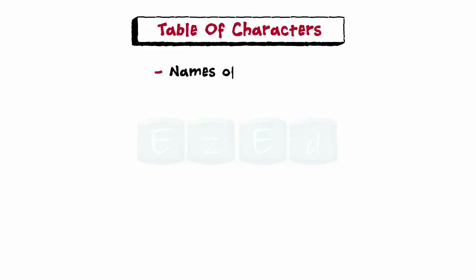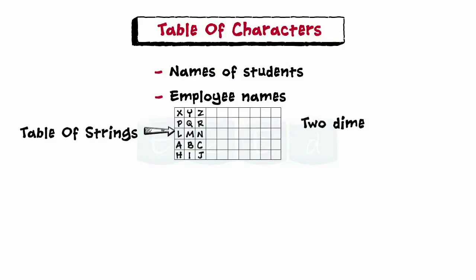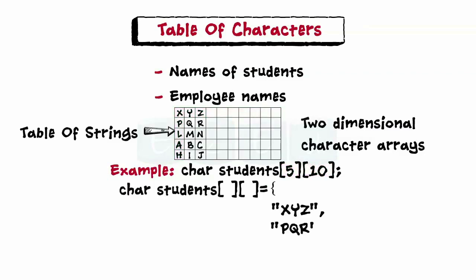Lastly, let's learn about the table of characters. We are often needed to list character strings such as names of students, employee names, etc. This is accomplished in C using a table of strings implemented as a two-dimensional character array. For example, this will create a table of five memory locations each having a length of 10 locations, and it can also be written in an alternative form.